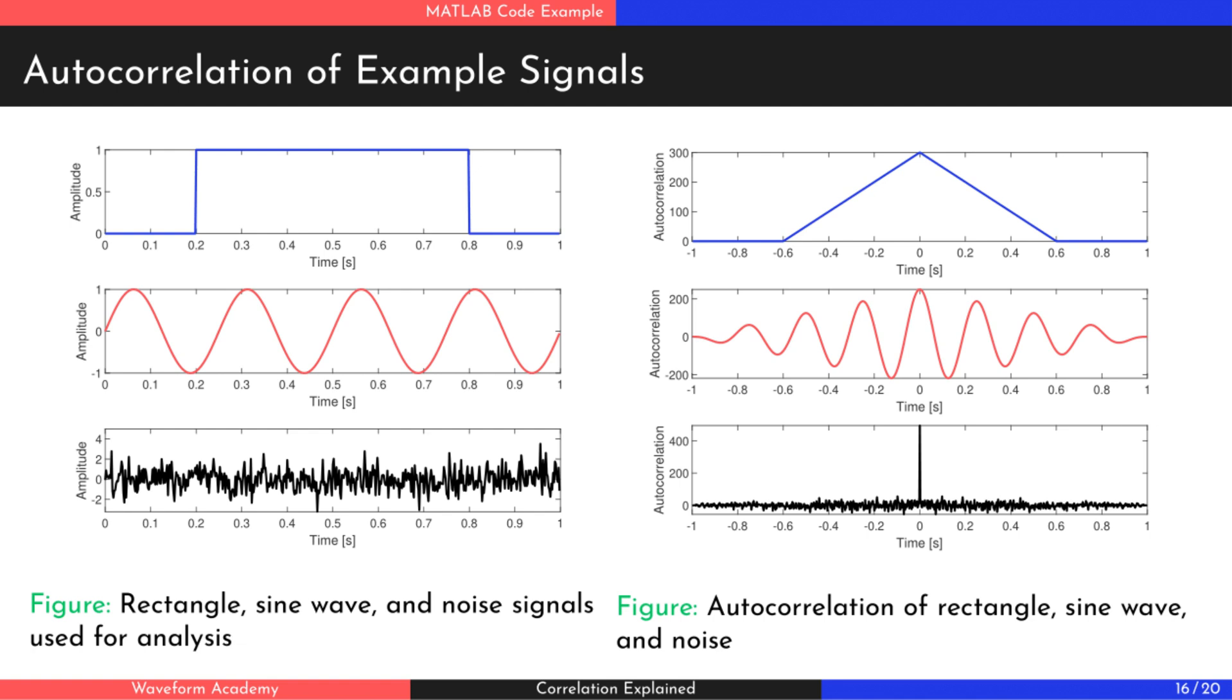And for noise, the autocorrelation looks random, except for a sharp peak at zero lag, showing that noise only resembles itself when perfectly aligned. This property is widely used in telecommunications for synchronization.